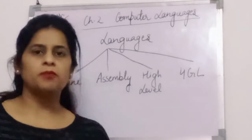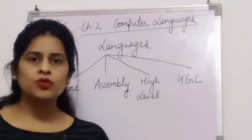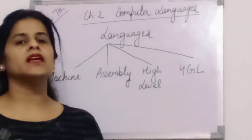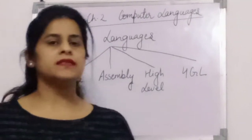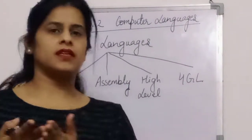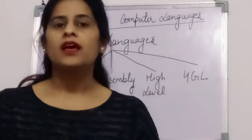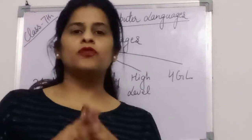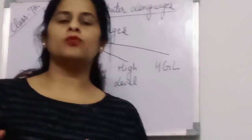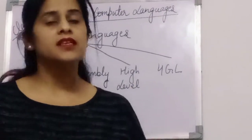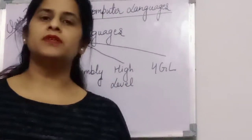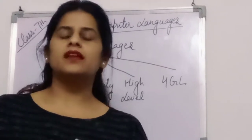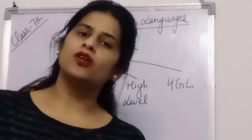Now I think every concept is clear to you. I will show you the book work of this chapter and make it clear step by step. Firstly we will be filling the blanks, then true and false, then MCQs. After that I will send you a copy of the answer keys of the question answers of this chapter.